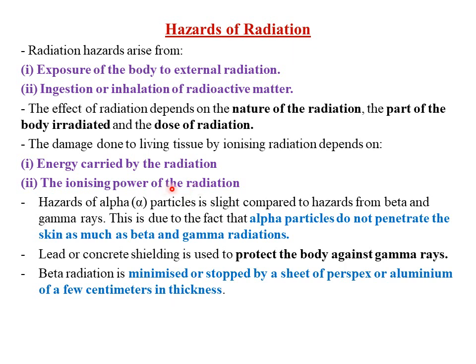For example, we have the gamma rays. The hazards of alpha particles is slighter compared to the hazards from beta and gamma rays. This is due to the fact that alpha particles do not penetrate the skin as much as beta and gamma radiation. If the radiation is not able to penetrate through the skin, then its ability to harm the internal body parts is also very low.